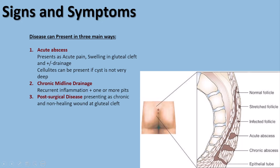Pilonidal disease can be presented in three main ways. The first is acute abscess formation, presenting with acute pain and swelling in the gluteal cleft along with drainage of pus. Note that although cellulitis can occur, because most cysts are deep in the gluteal tissue, cellulitis is usually not seen in this group of patients.